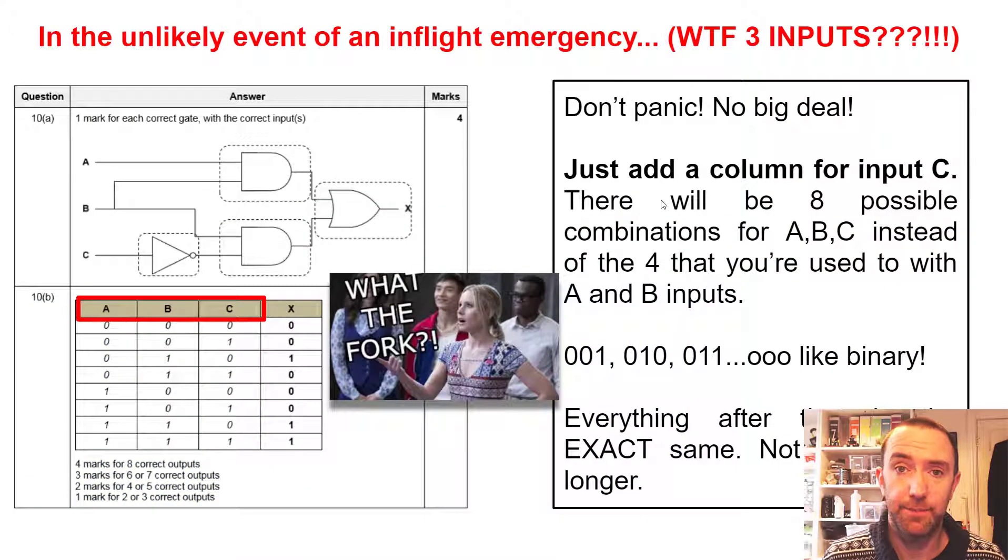So if you get three inputs in an exam and the examiner's just being really cruel, they're not being cruel. This is great. This is no harder, it's just longer. So they're just killing exam time, letting you do the same thing a little bit more. So there's more combinations. The trick to get through this is actually count in binary because that will do all of your combinations for A, B, and C. It's the exact same thing again, there's just more inputs.